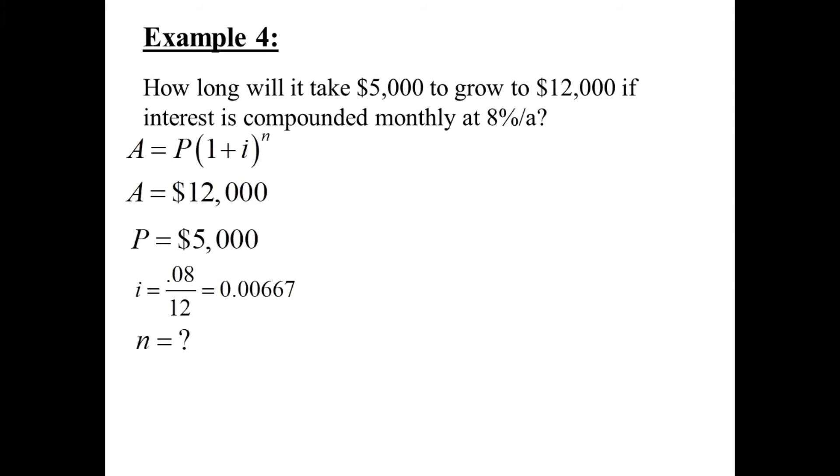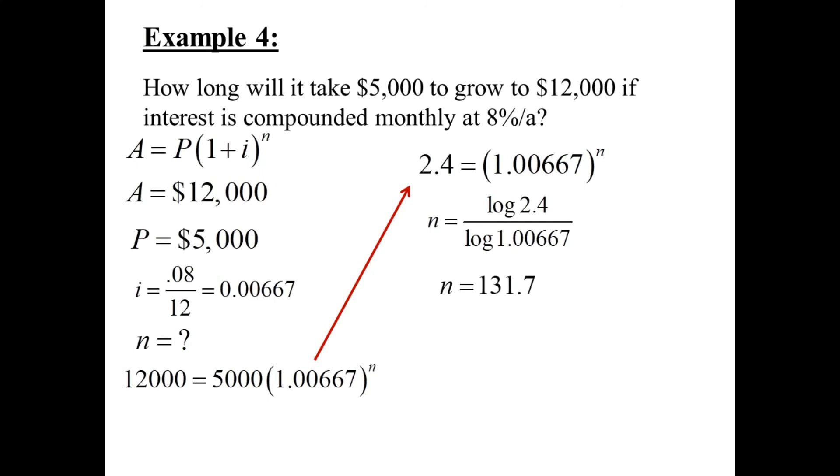So we'll need to find N, because that's what we seek. So we'll plug them all into the formula. And now we have to take this equation and figure out N. We move everything away from N. We start at the 5,000. 12,000 divided by 5,000 is 2.4. And now, if you recall, in this configuration to solve for N, we do a little trick with logarithms. N is log over log. Log, 2.4 divided by log, 1.00667. Use a calculator. N is 131.7.